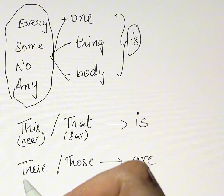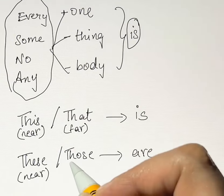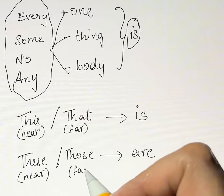Now here, these as a plural subject means some things are kept near. Those as a plural subject means the things are kept far.